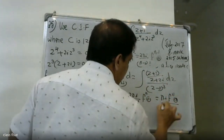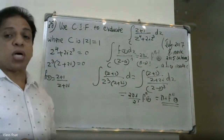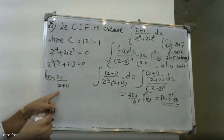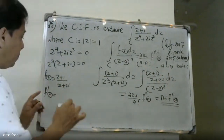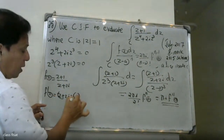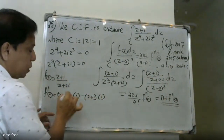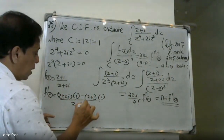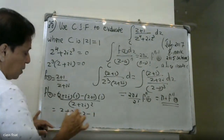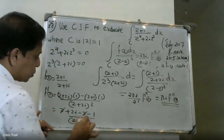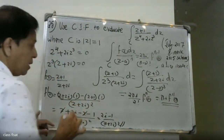Now we calculate f''(0). We have f(z) = (z+1)/(z+2i). Using the quotient rule for f'(z): numerator derivative times denominator minus numerator times denominator derivative, all divided by (z+2i)². f'(z) = [(z+2i) − (z+1)] / (z+2i)² = (2i−1) / (z+2i)².